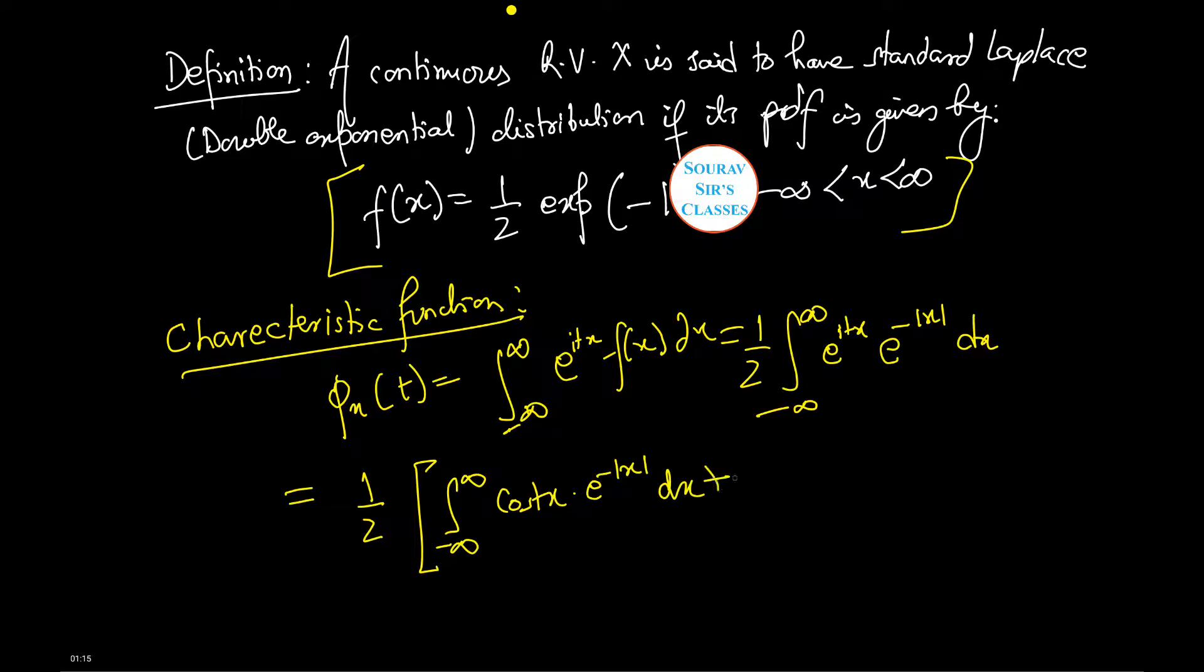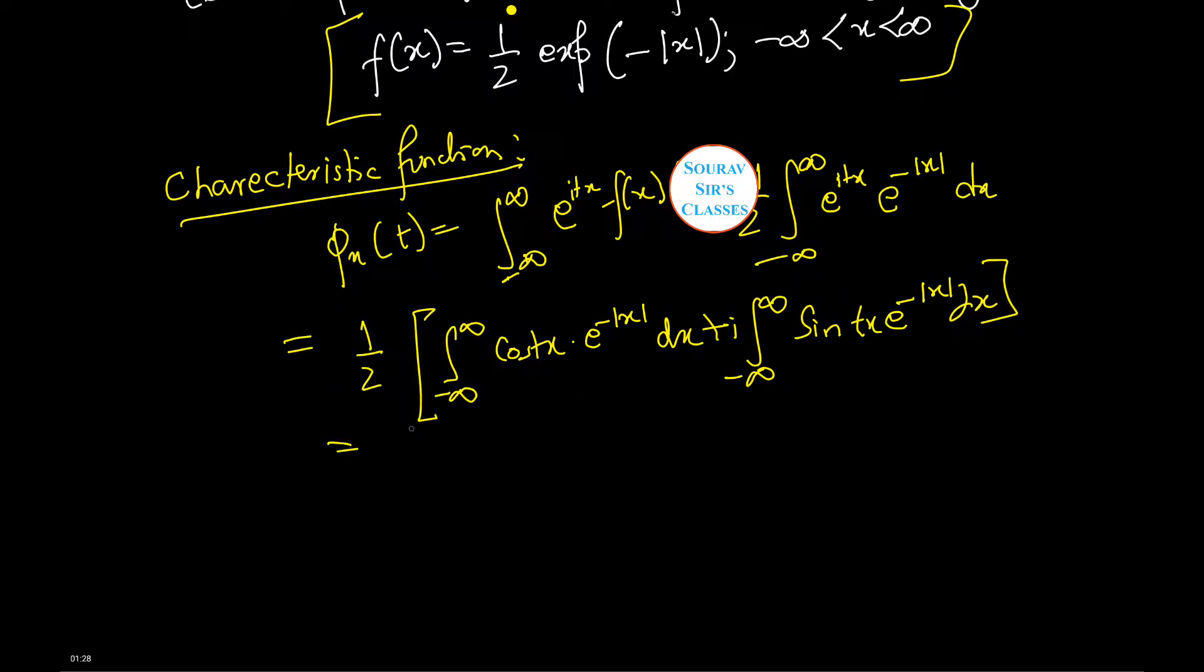This is equal to half into two integration from zero to infinity cos(tx) into e to power minus x dx. Since the integrands in the first and the second integrals are even and odd functions of x respectively...